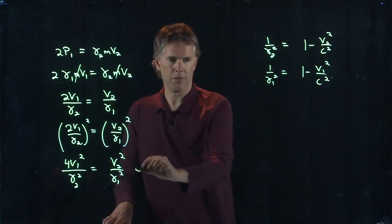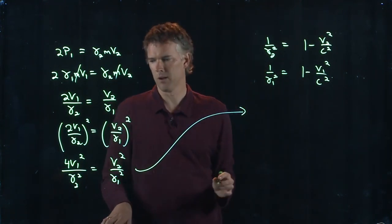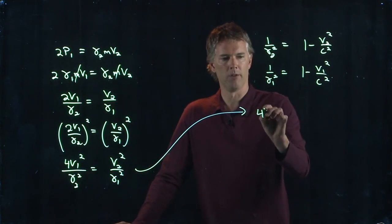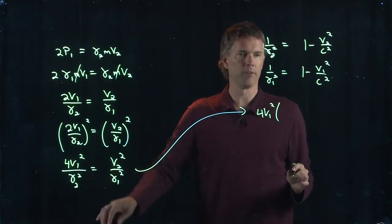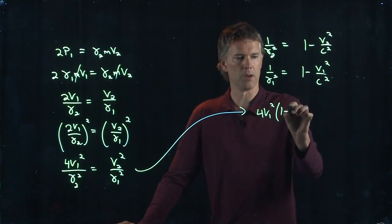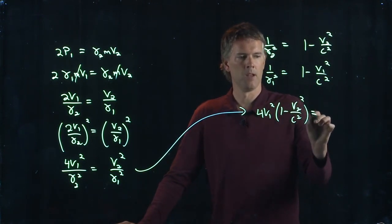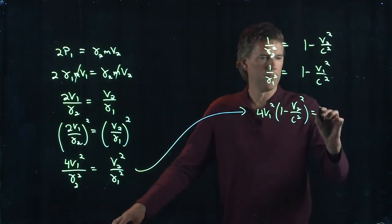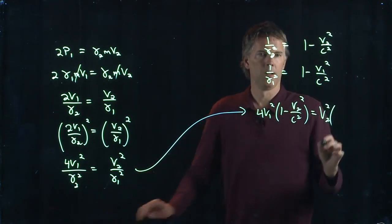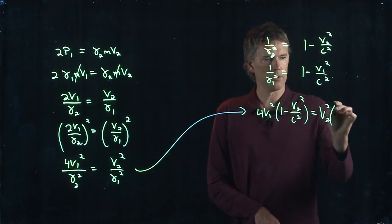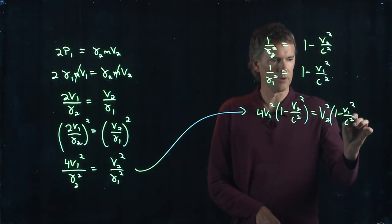And so now this whole thing here becomes the following. We get 4 v1 squared times 1 over gamma 2 squared, which is 1 minus v2 squared over c squared. And on the right side we have v2 squared times 1 over gamma 1 squared, which is 1 minus v1 squared over c squared.